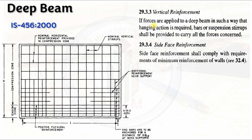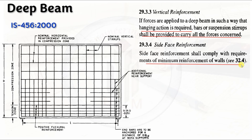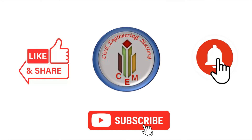Regarding vertical reinforcement: if forces are applied to a deep beam in such a way that hanging action is required, suspension stirrups shall be provided to carry all the forces concerned. For side face reinforcement, it shall comply with the requirements of minimum reinforcement per Clause 32.4. That covers the negative reinforcement of deep beams.